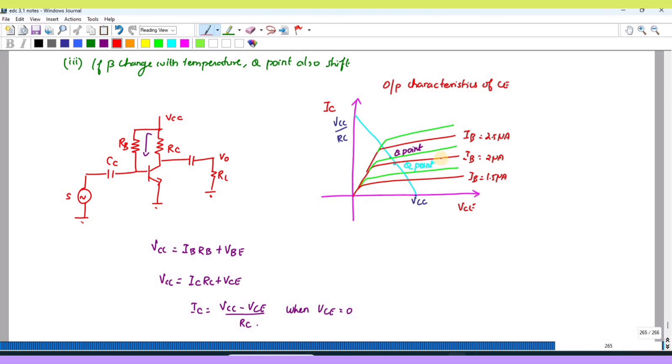So the beta will change - if beta changes, the IC value also gets changed because IC is equal to beta times IB. If it was normal, due to the change in temperature the IC value also gets changed. So this is a change in beta.